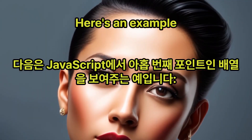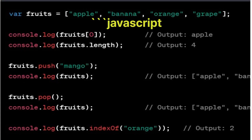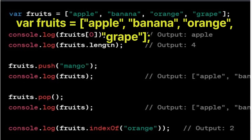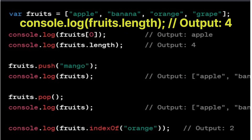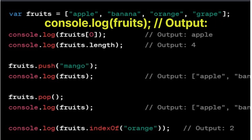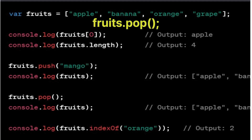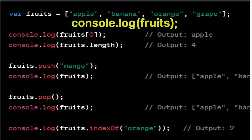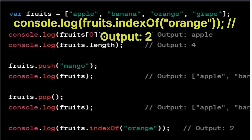Here's an example illustrating the ninth point, arrays, in JavaScript: var fruits = ['apple', 'banana', 'orange', 'grape']. console.log(fruits[0]) outputs 'apple'; console.log(fruits.length) outputs 4. fruits.push('mango'); console.log(fruits) outputs ['apple', 'banana', 'orange', 'grape', 'mango']. fruits.pop(); console.log(fruits) outputs ['apple', 'banana', 'orange', 'grape']. console.log(fruits.indexOf('orange')) outputs 2.